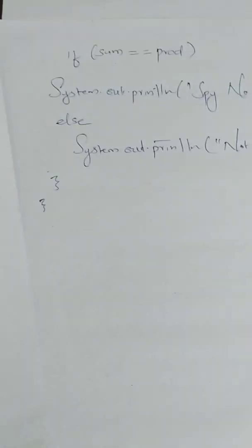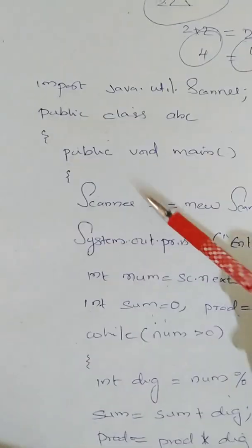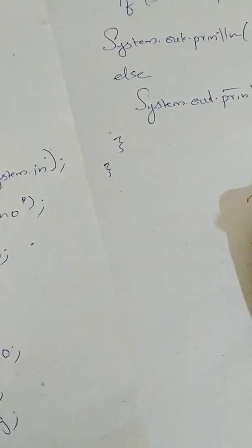Method close, class closed. So now we will work out this example. I am taking 22 for num. So your num is equal to 22.